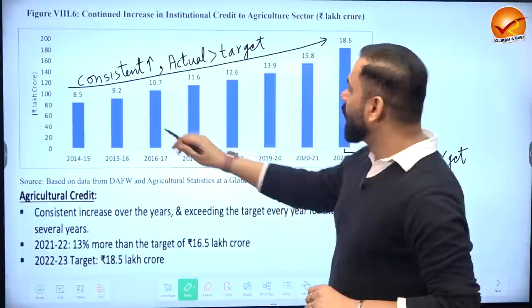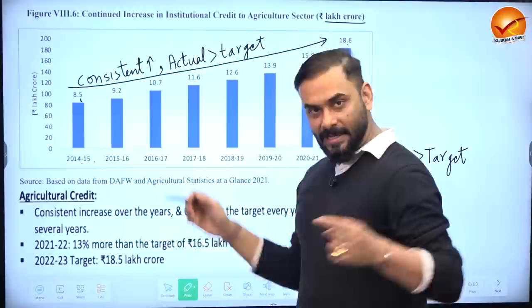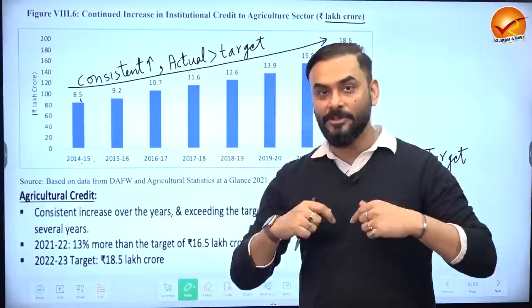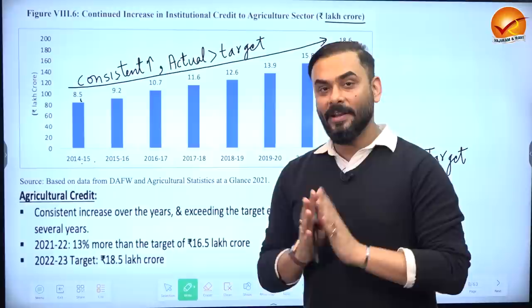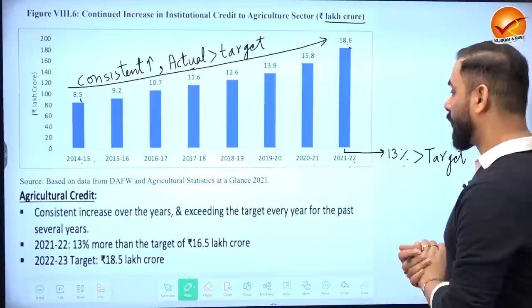Regarding credit flow in agriculture: in 2014-15 it was 8.5 lakh crore rupees and in 2021-22 it reached 18.6 lakh crore rupees — a consistent increase. Furthermore, every year the government sets a target for agricultural credit, and the actual flow consistently exceeds the target. In 2021, the actual credit flow was 13 percent more than the target, which is a very positive sign.